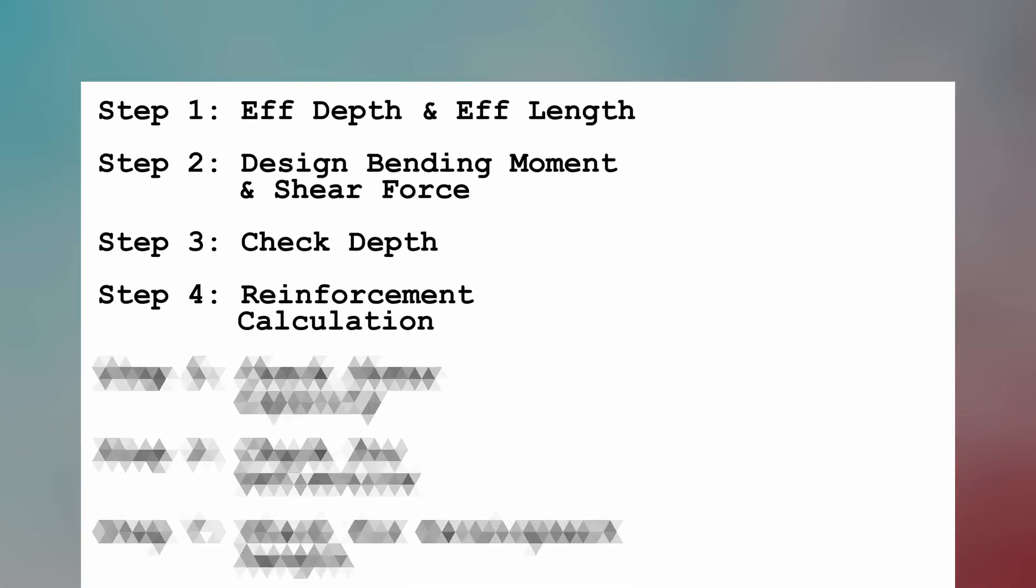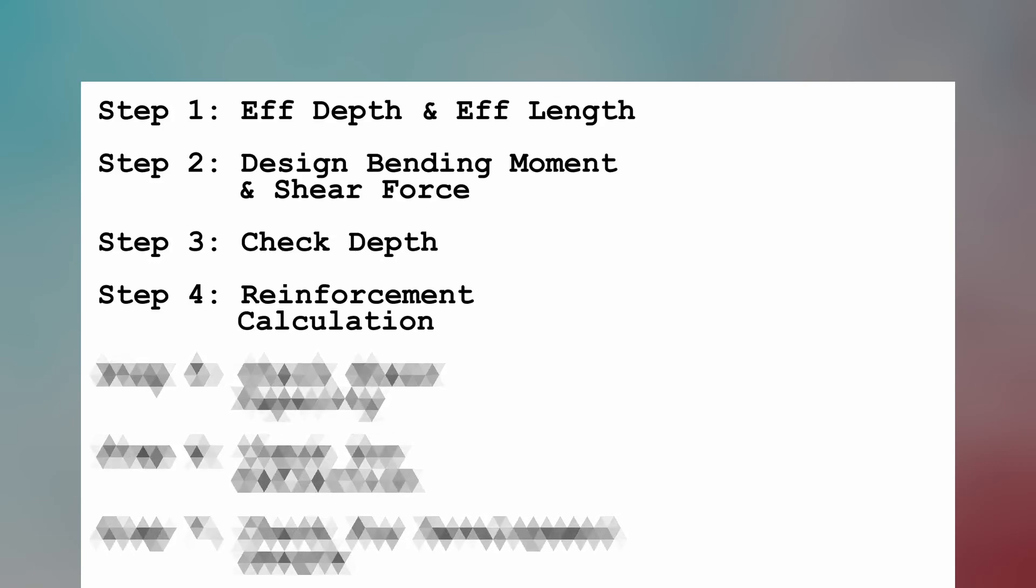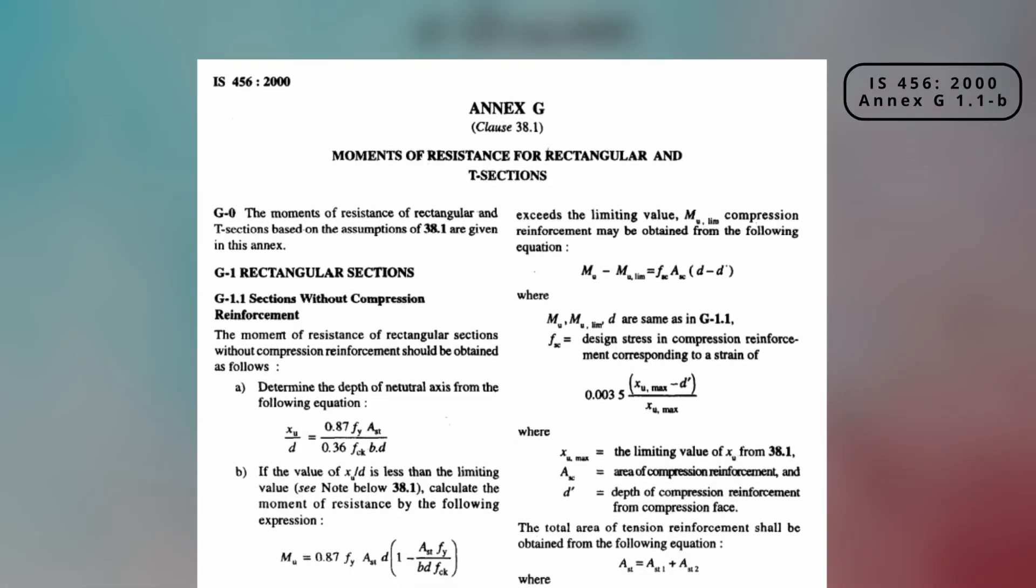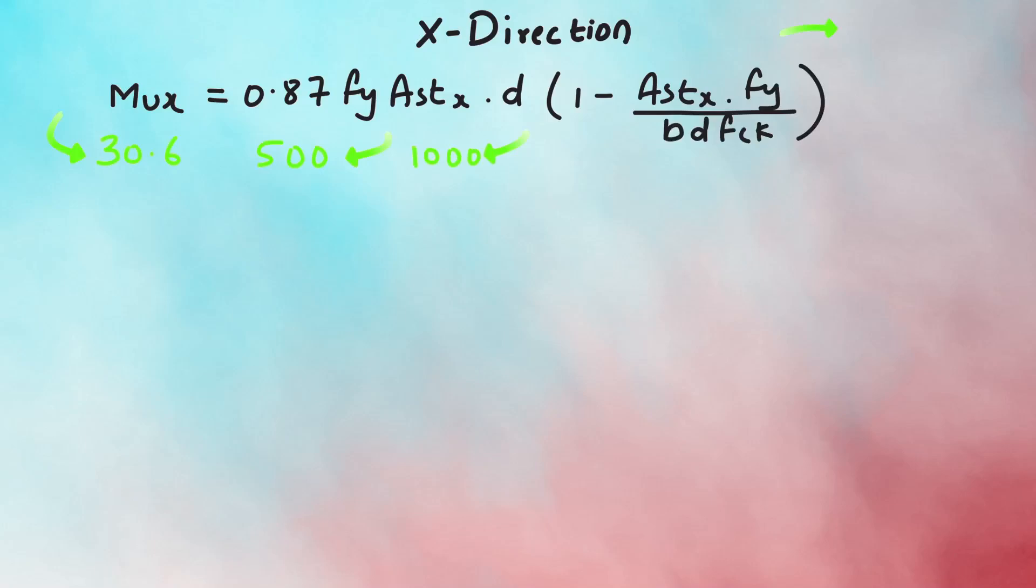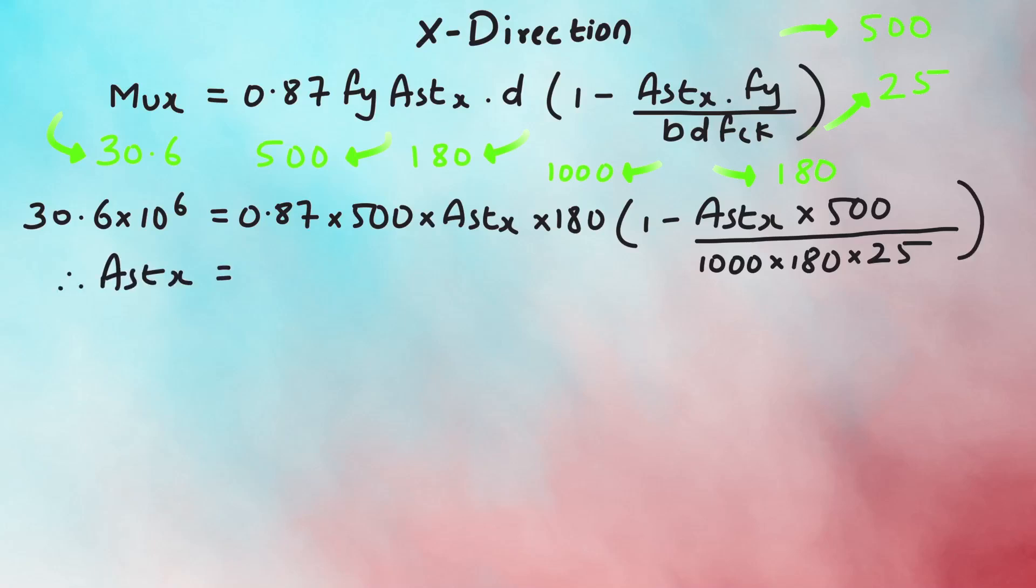Step 4 is reinforcement calculation. Firstly, let's calculate the area of steel for X direction as per Annex G clause 1.1B using this formula. We have calculated all these values. Only Ast X is unknown. So, substituting the values and solving for Ast X gives the total area of steel as 405.217 mm square, which means for a unit span of 1 meter we have to provide 405 mm square of steel.